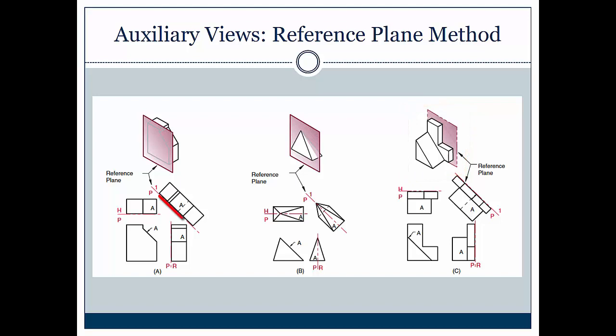A reference line is then generated. This can be seen in this image. This is my reference plane and then we have our reference lines here. The reference line then is used to make measurements that are transferred from the top view to the auxiliary view. The advantage of the reference plane method is that if it's positioned correctly, it can result in fewer measurements.